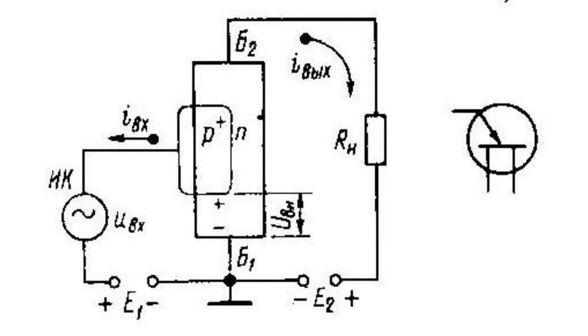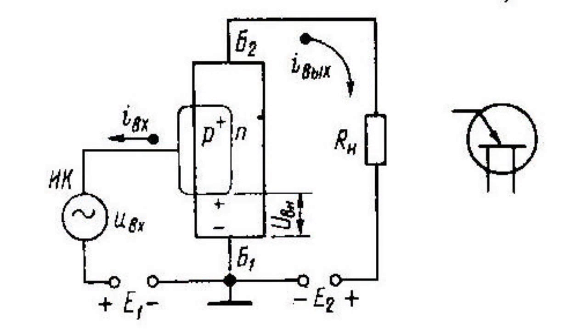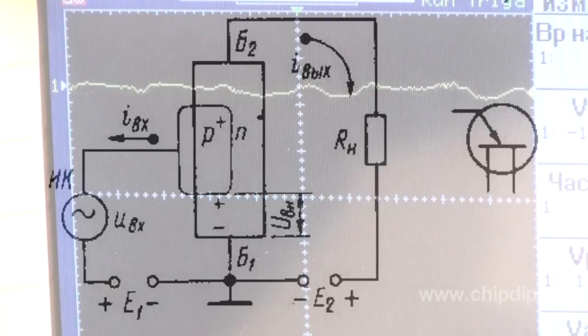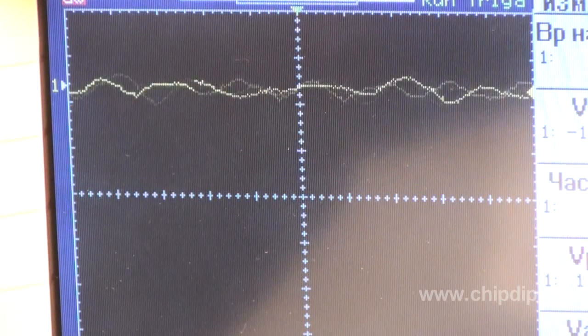Due to this fact, base resistance decreases. While the input voltage changes, it also changes the level of injection and base resistance, and consequently the output current, and under all there appears a strengthened output voltage.